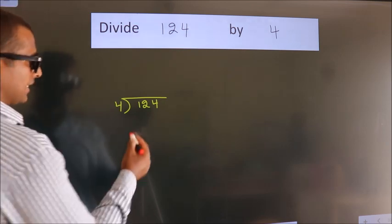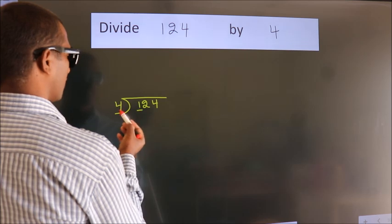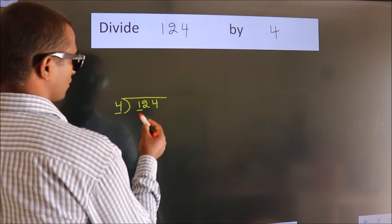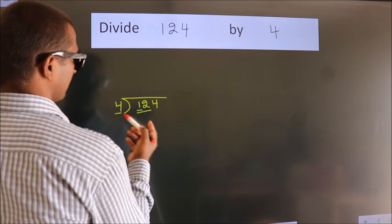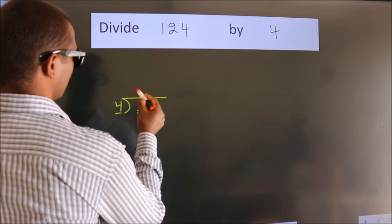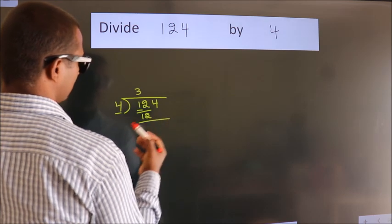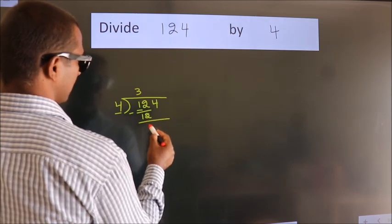Next. Here we have 1. Here 4. 1 is smaller than 4, so we should take 2 numbers: 12. When do we get 12? In the 4 table. 4 threes is 12. Now we should subtract. We get 0.